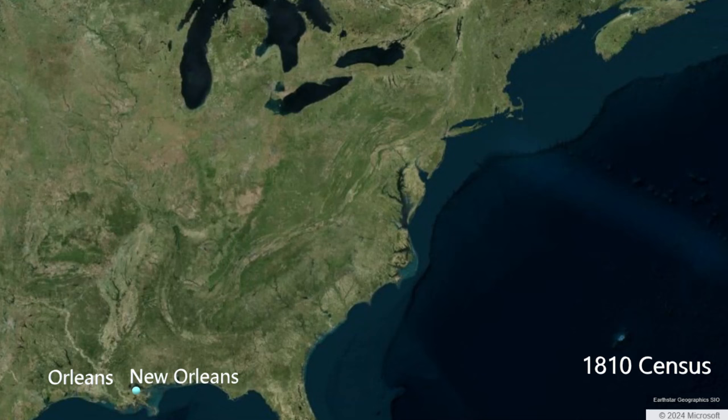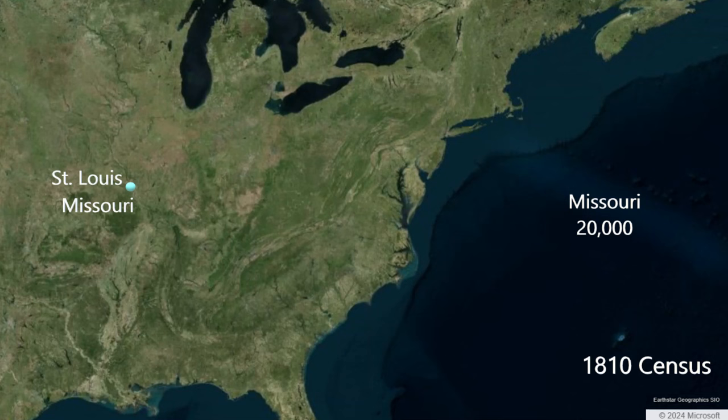Above the Orleans Territory is the Louisiana Territory in blue. In future Arkansas and the Louisiana Territory, there are 1,000 intrepid settlers. Moving up the Mississippi River on the western side is the future state of Missouri. This part of the Louisiana Territory claims 20,000 residents. St. Louis had been a French trading post for generations by this time, so there was already an established European population there.